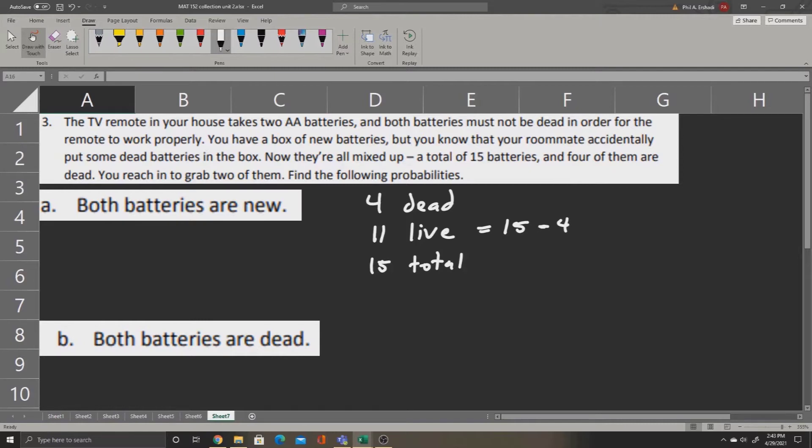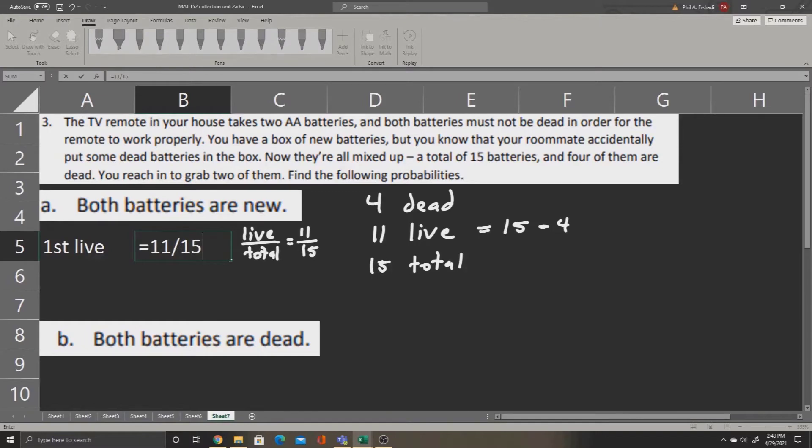Now let's first find the probability of drawing our first live battery. The probability of drawing a live battery is going to be the number of live batteries divided by the total. We have 11 live batteries and a total of 15. So in this box we can type equals 11 divided by 15, giving us a 0.7333 probability of drawing one live battery the first time.